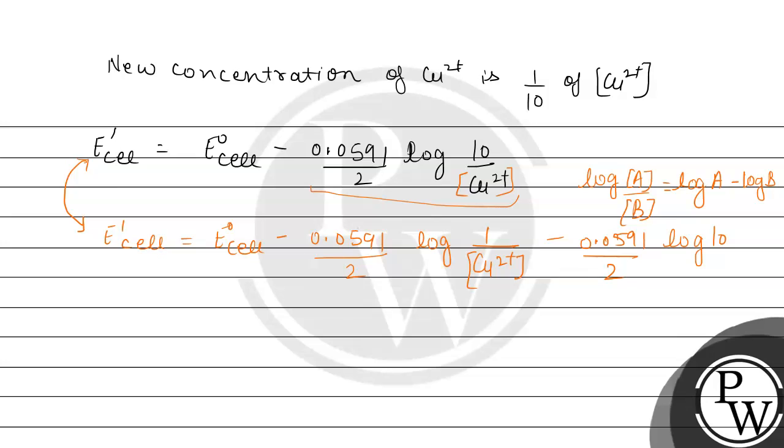If we take 0.0591 divided by 2 common, then we will have log of a minus log of b, and log of a minus log of b is log a divided by b. So we will have this equation again, just we have rearranged this. We have the value of E cell that is equal to the standard reduction potential minus 0.0591 divided by 2 log of 1 divided by Cu²⁺. This was our original equation.